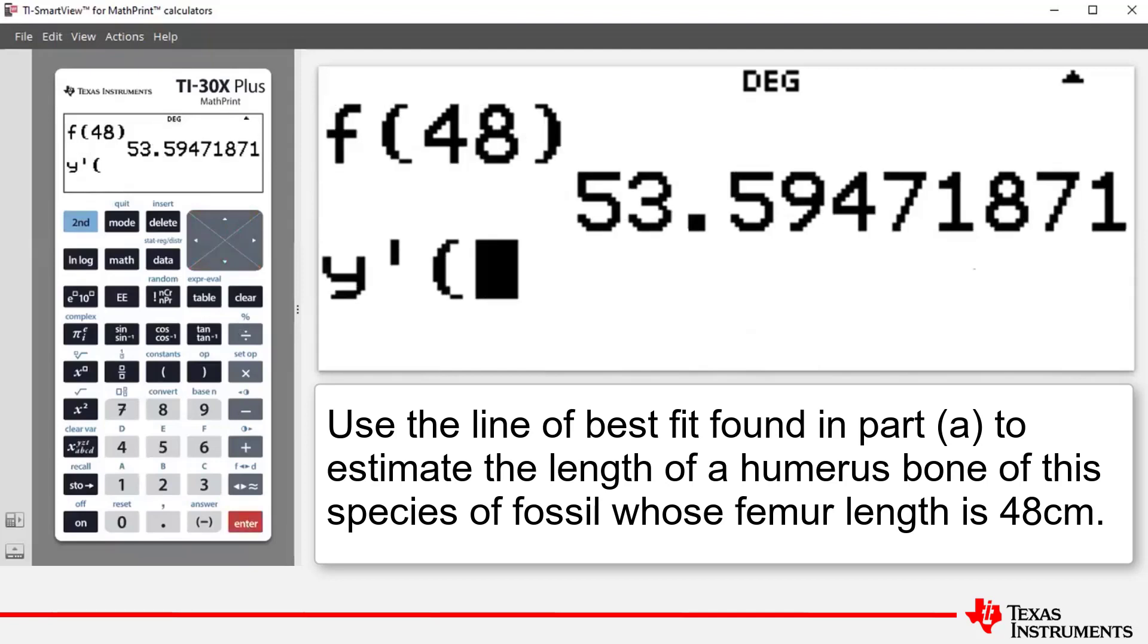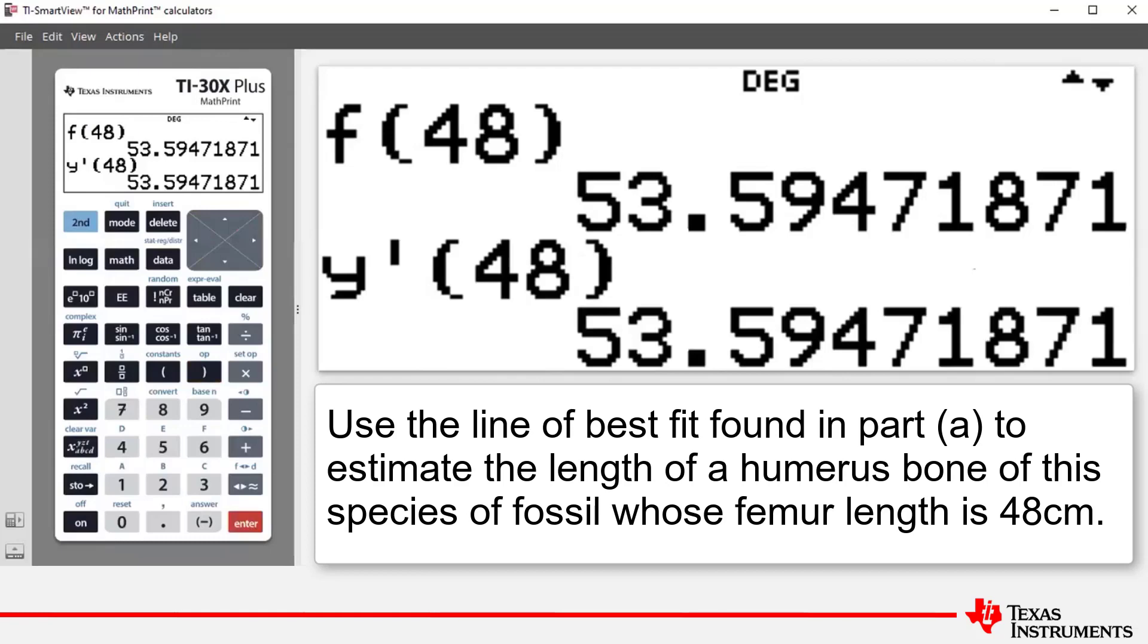that pastes Y dashed open bracket onto the home screen. We now enter 48, press the close bracket key, press enter and we get the same result. So that's showing you a second way of doing part B.